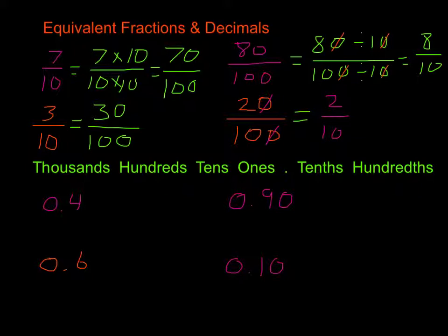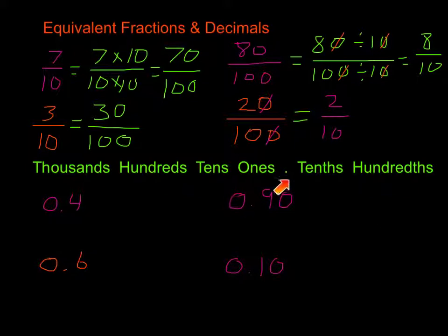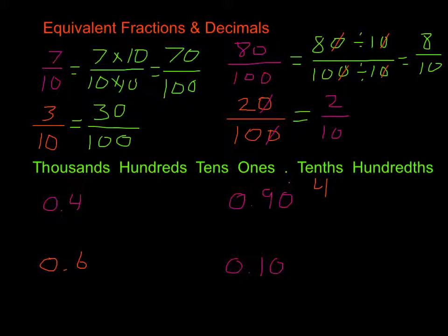These ones down below, we're going to look at our place value chart. Notice our place value chart has thousands, hundreds, tens, ones, decimal point, tenths, and hundredths. Our first one is 0.4. Because our decimal point is here, we know that our 4 is in the tenths position. We want to make it hundredths, so all we have to do is add a zero in the hundredths place. So 0.4 is equal to 0.40, and that is showing our hundredths.